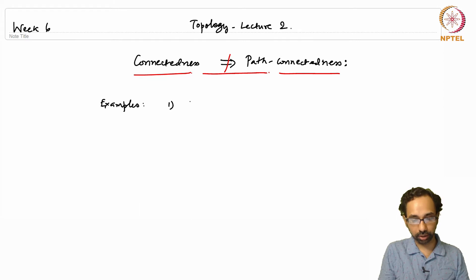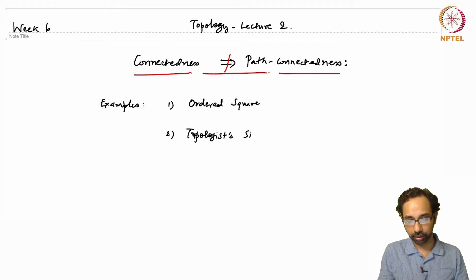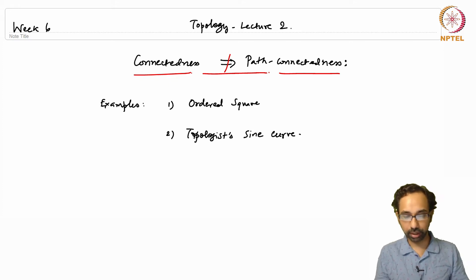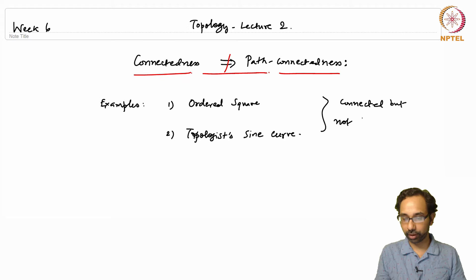The first example is called the ordered square, and the second one is called the topologist's sine curve. We will describe these two spaces one by one and prove that both are connected but not path connected.